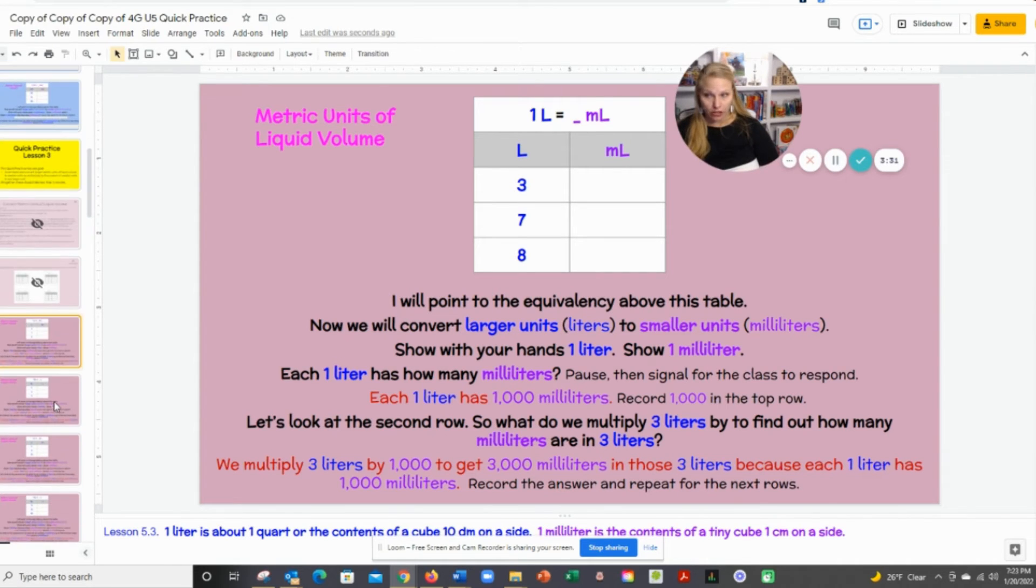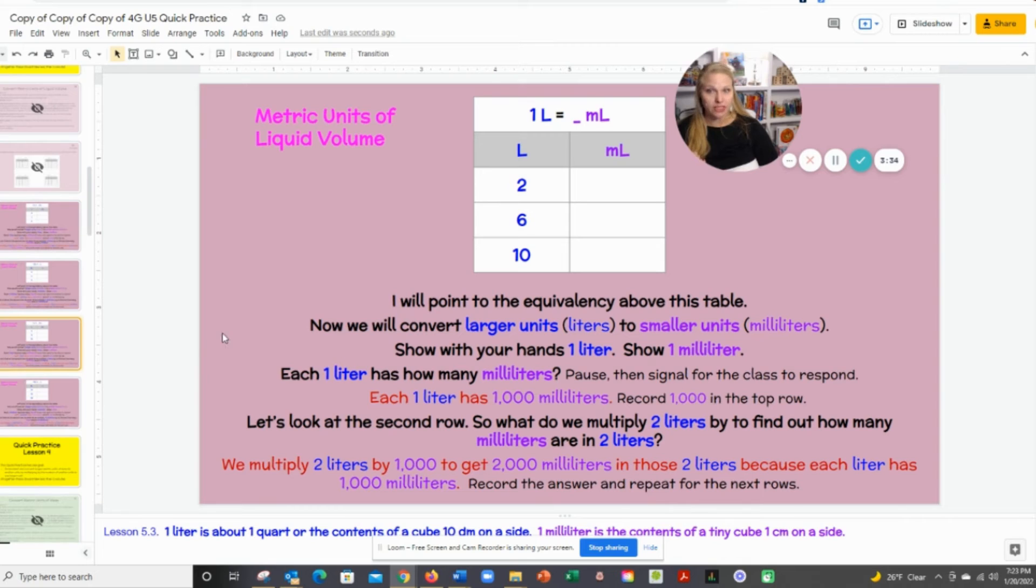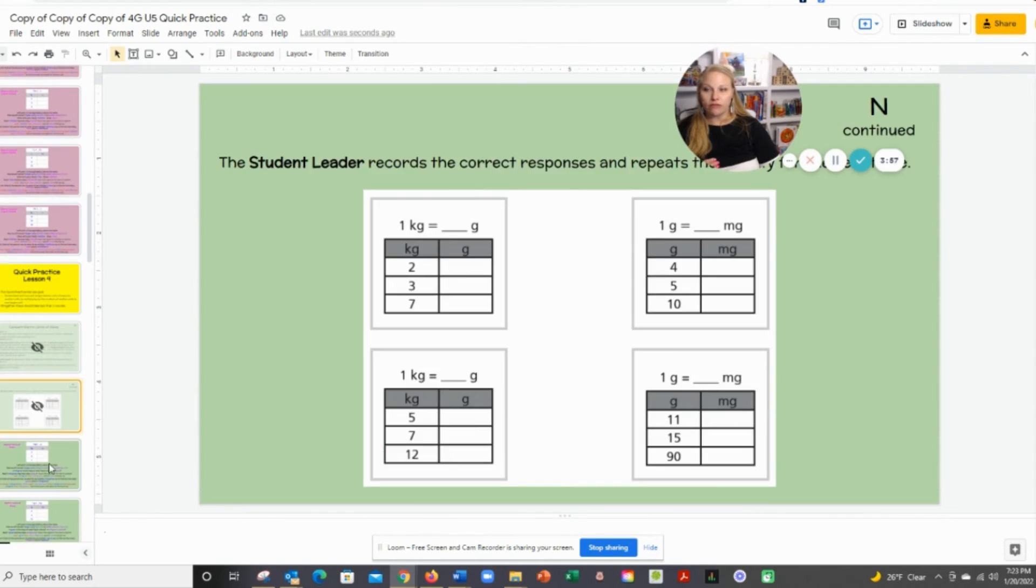Now we're talking about liquid volume. You'll do the same types of conversions, talking about we're going from liters to milliliters. So you can make that interactive. Boys and girls, are we going from a large unit to a small unit or a small unit to a large unit? Class, we're going from a large unit to a small unit. Boys and girls, how many milliliters are in one liter? Class, they gave you the answer. Boys and girls, what will I do to my liters to get milliliters? Then they continue to practice conversions.